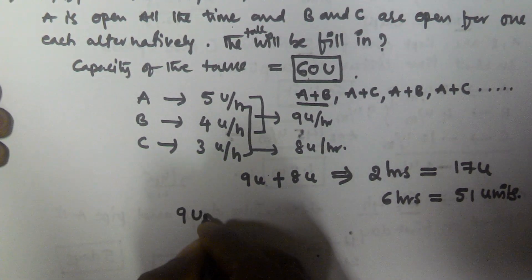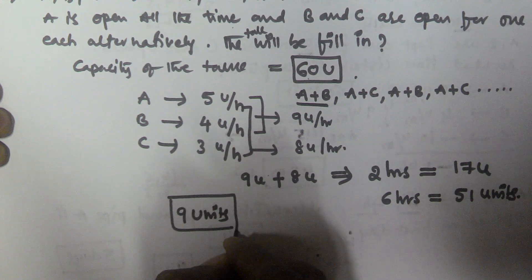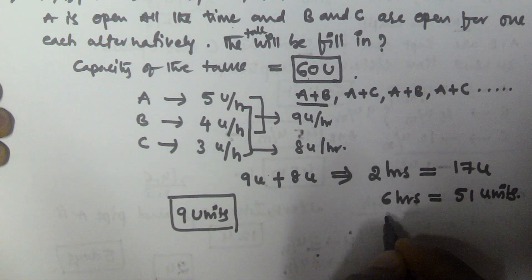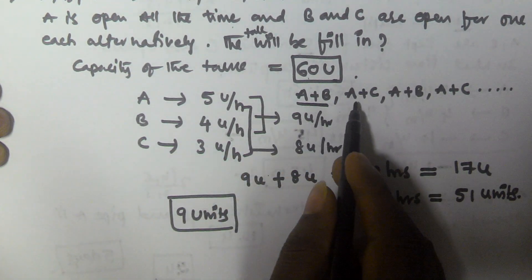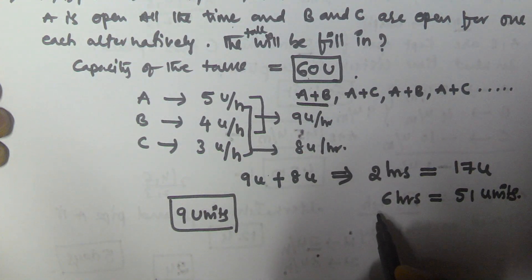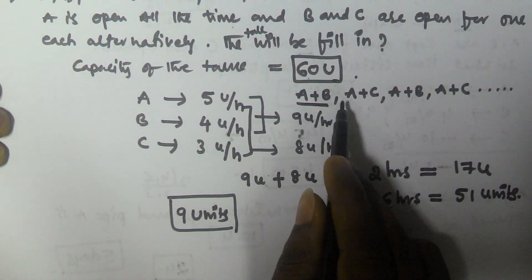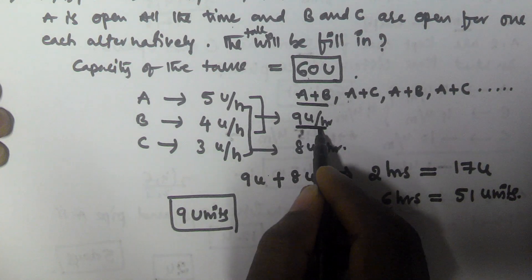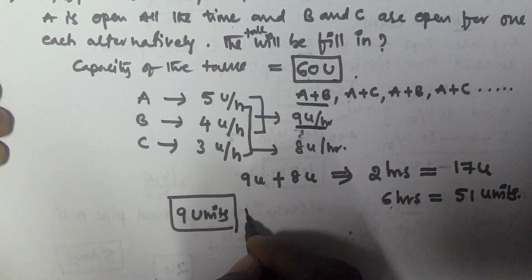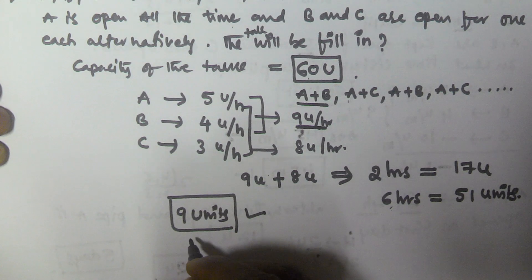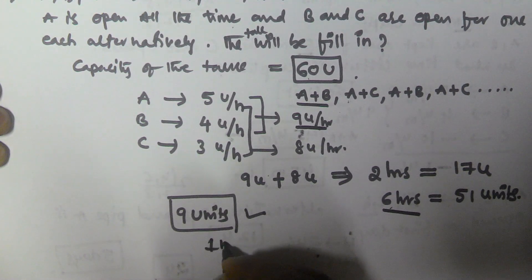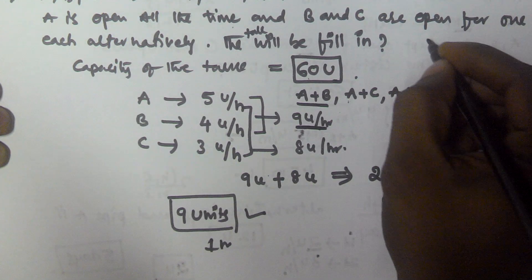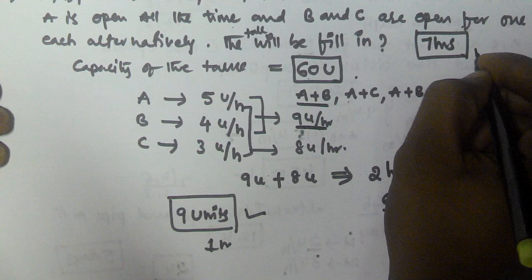The remaining units are 9 units. On the 7th hour, A and B are going to be working together. A and B will finish 9 units per hour, so in 1 hour they will finish the remaining 9 units. So the total time taken is 6 hours plus 1 hour — the tank will be filled in 7 hours.